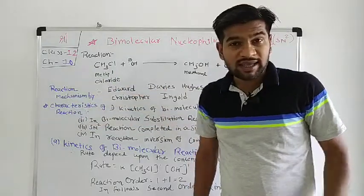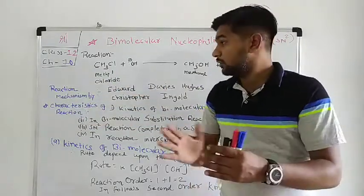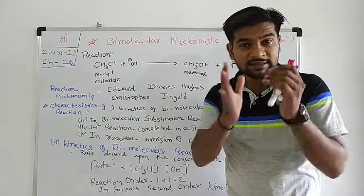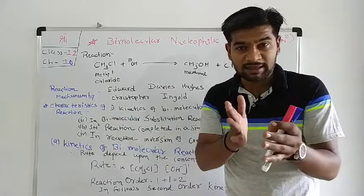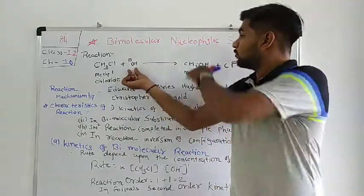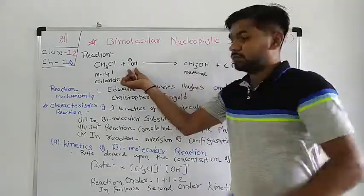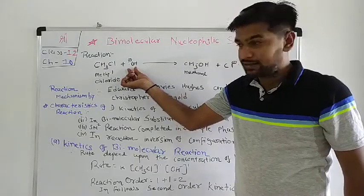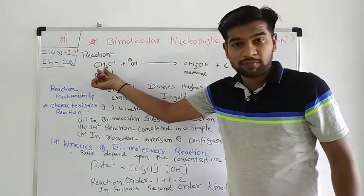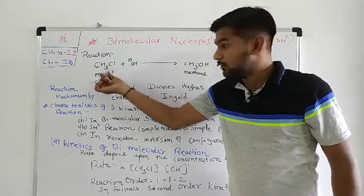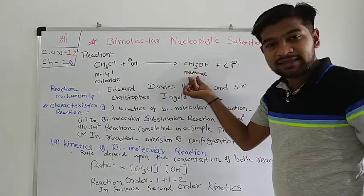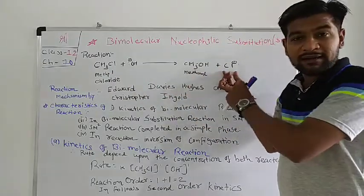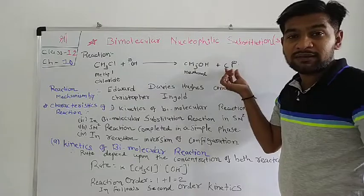So, how does this reaction happen? Methyl chloride — CH₃Cl — reacts with the nucleophilic group OH⁻, which is the attacking group. We get methanol, CH₃OH, and then the chloride ion — this is the leaving group.